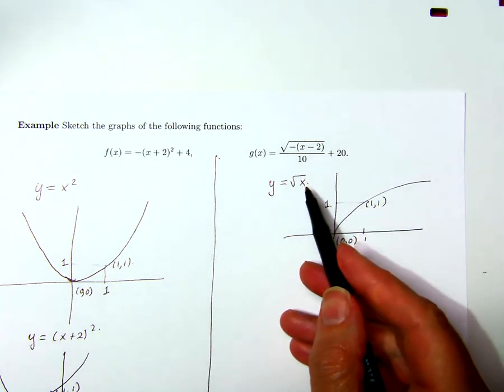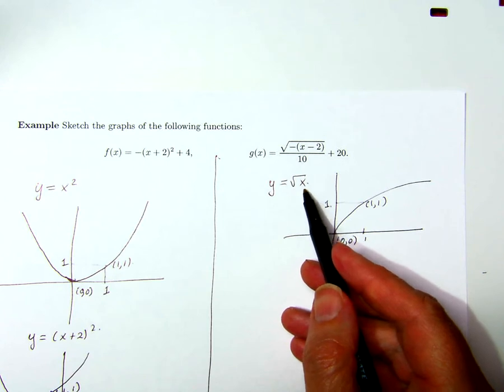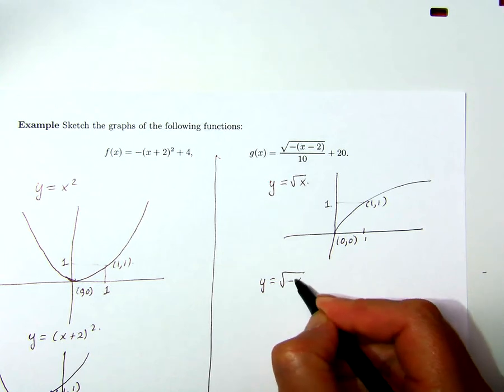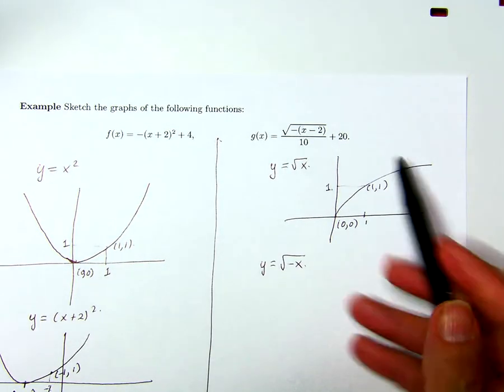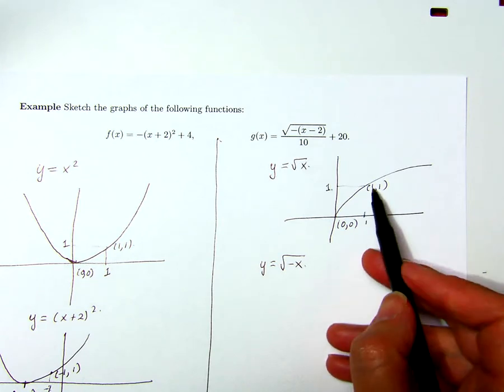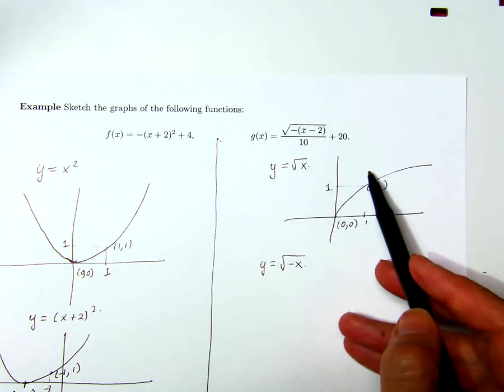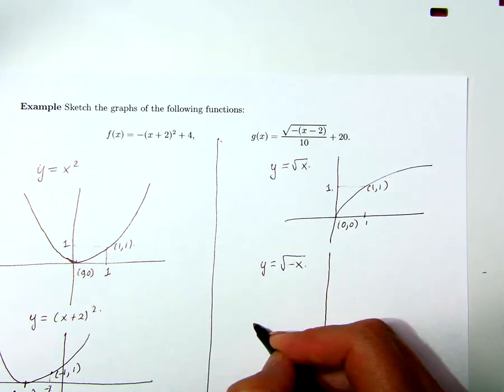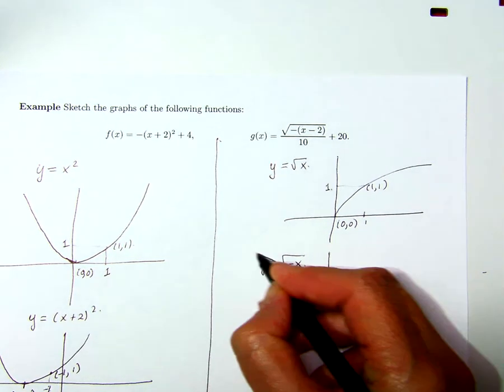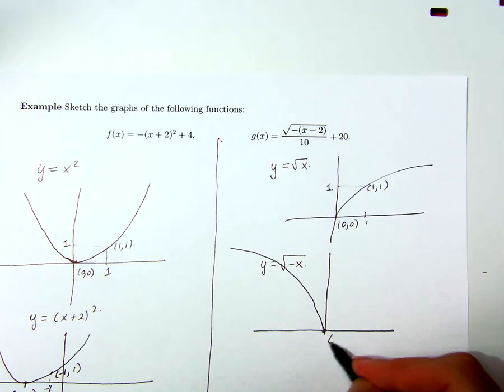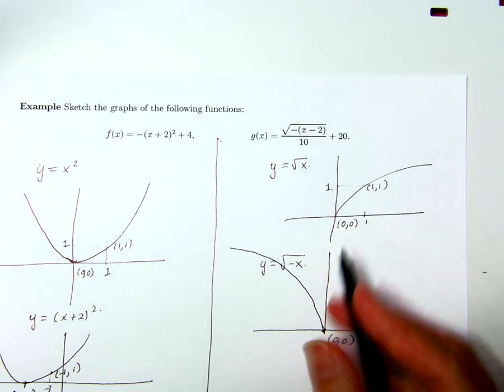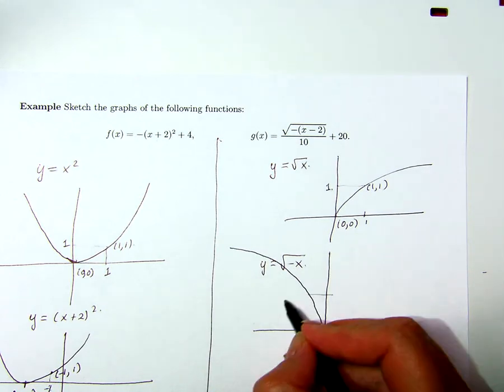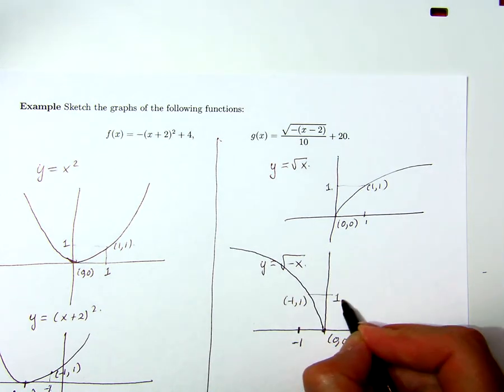And the first thing I'm going to do is take the square root of negative x. You could work these transformations in a different order if you like, but I'm going to choose this path. So I've changed the x to negative x, and now that reflects the graph in the y-axis. So zero zero stays where it is, and one one gets changed to negative one one. So it's right here.